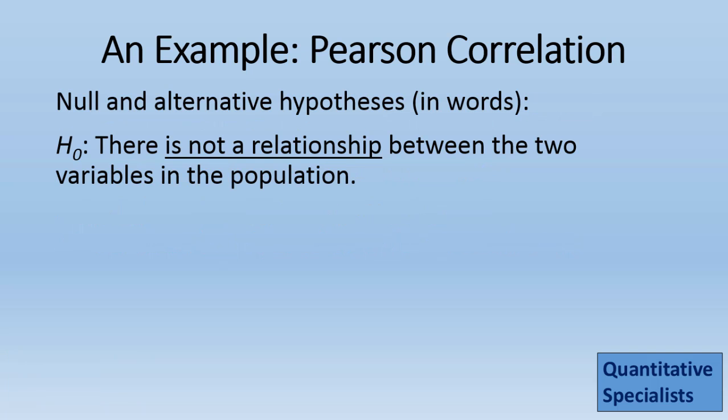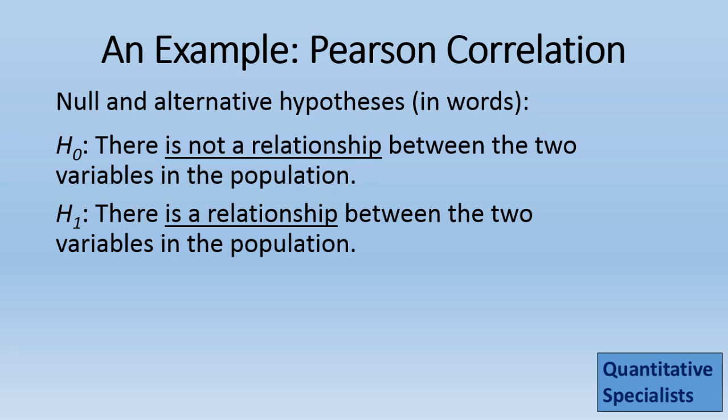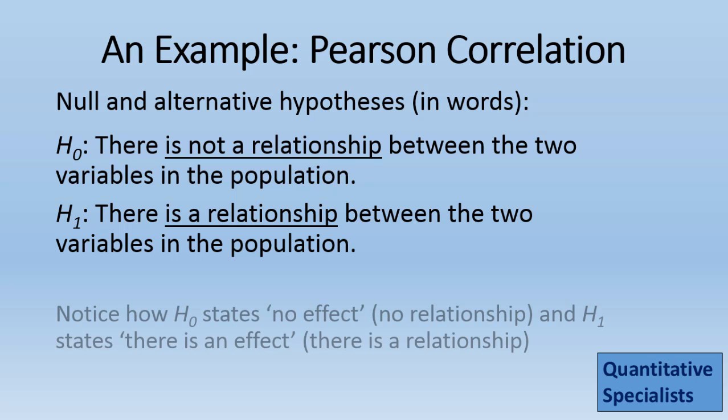In words, the null would state: there is not a relationship between the two variables in the population. The alternative would state the opposite: there is a relationship between the two variables in the population. Notice how the null states no effect or no relationship, whereas the alternative states there is an effect or there is a relationship.